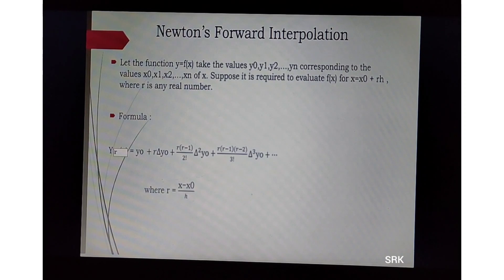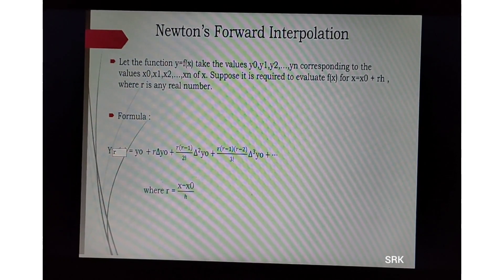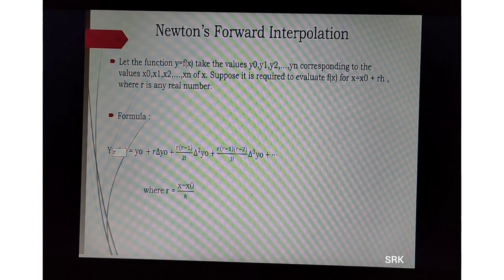Suppose it is required to evaluate f of x for x equal to x0 plus rh where r is any real number. The formula is y equals y0 plus r into del y0 plus r into r minus 1 divided by 2 factorial into del square y0 plus r into r minus 1 into r minus 2 divided by 3 factorial del cube y0 plus continuous up to n, where r equals x minus x0 divided by h, where h is the step size.